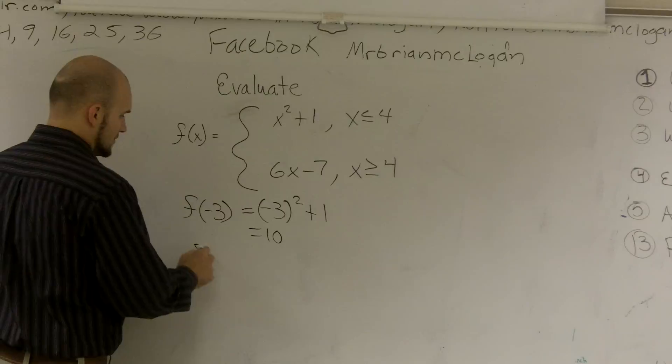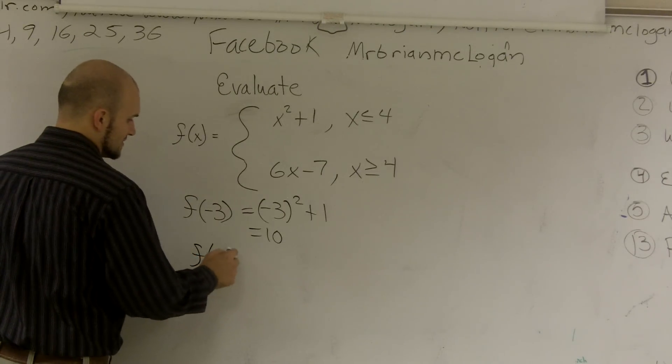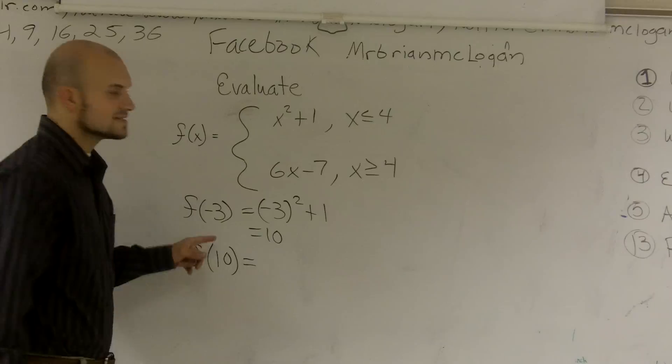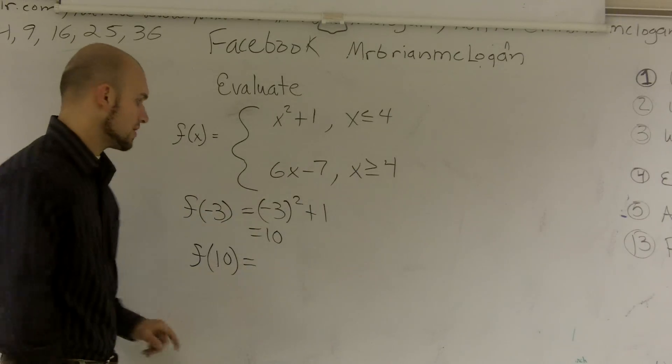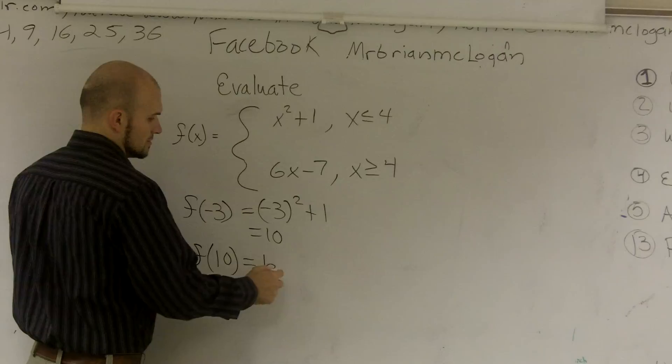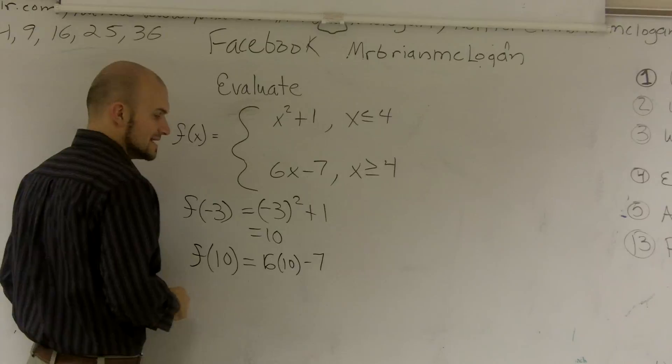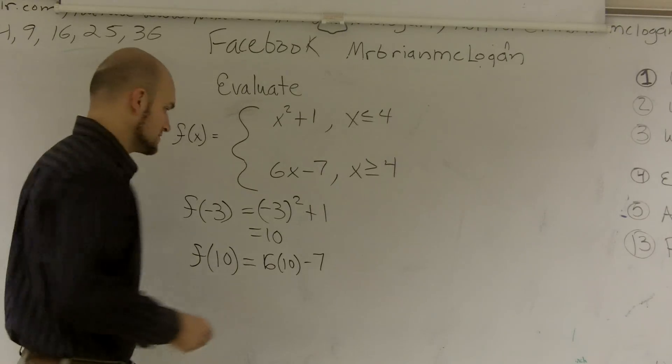And then if I want to do f of 10, that's fine. f of 10, since 10 is greater than 4, I'm going to plug it only into this function. 6 times 10 is 60, minus 7 is going to be 53.